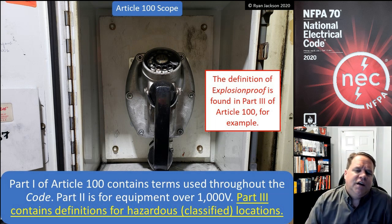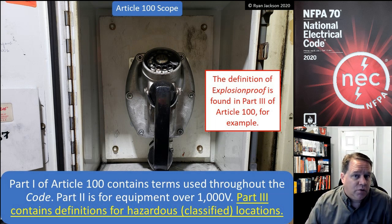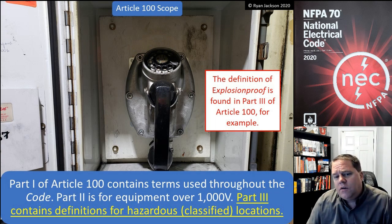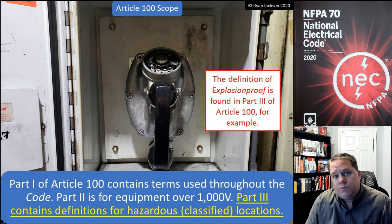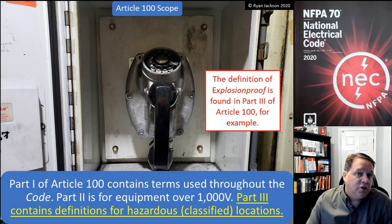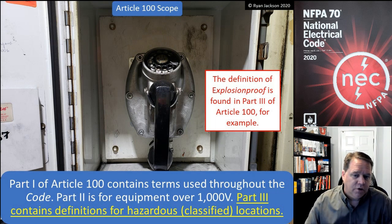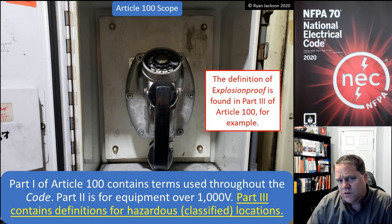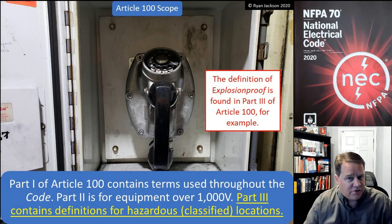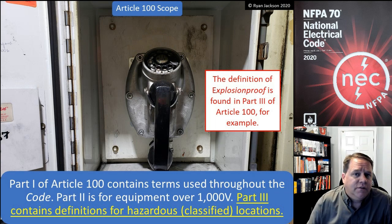Part three contains the definitions for hazardous or classified locations. What we're looking at in the picture is an explosion-proof telephone. If you're looking for the definition of "explosion proof," that is in Article 100 — but it's in Part three. That's where all the hazardous location definitions are: explosion proof, intrinsically safe, dust ignition proof, things like that. You'll want to find yourself in Part three of Article 100.